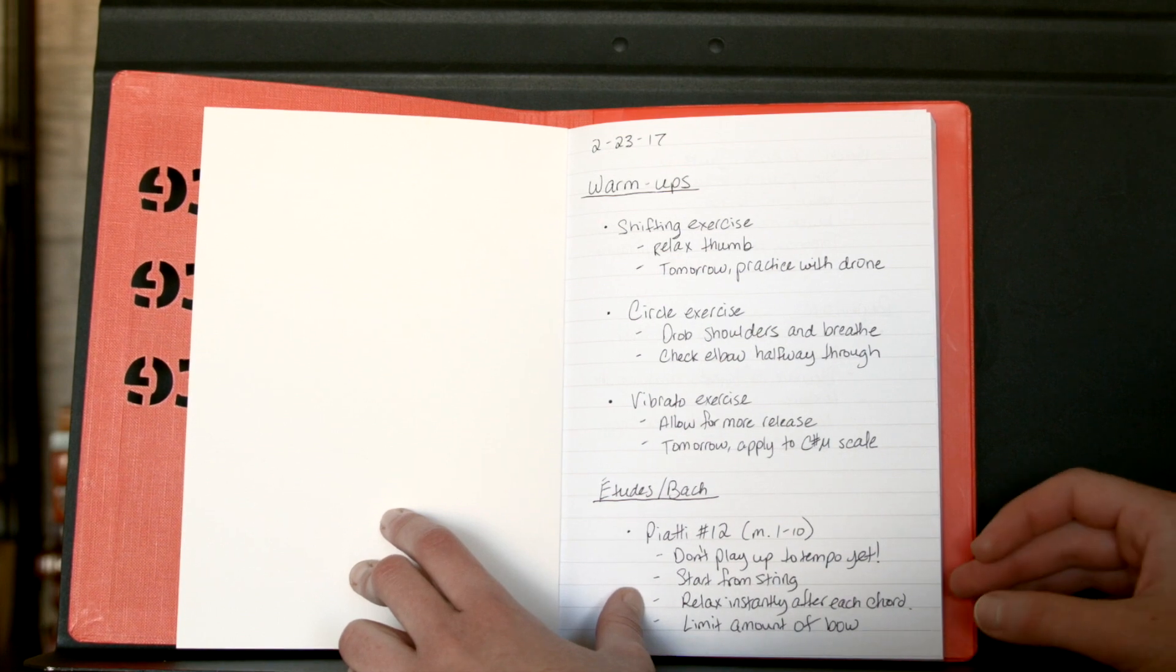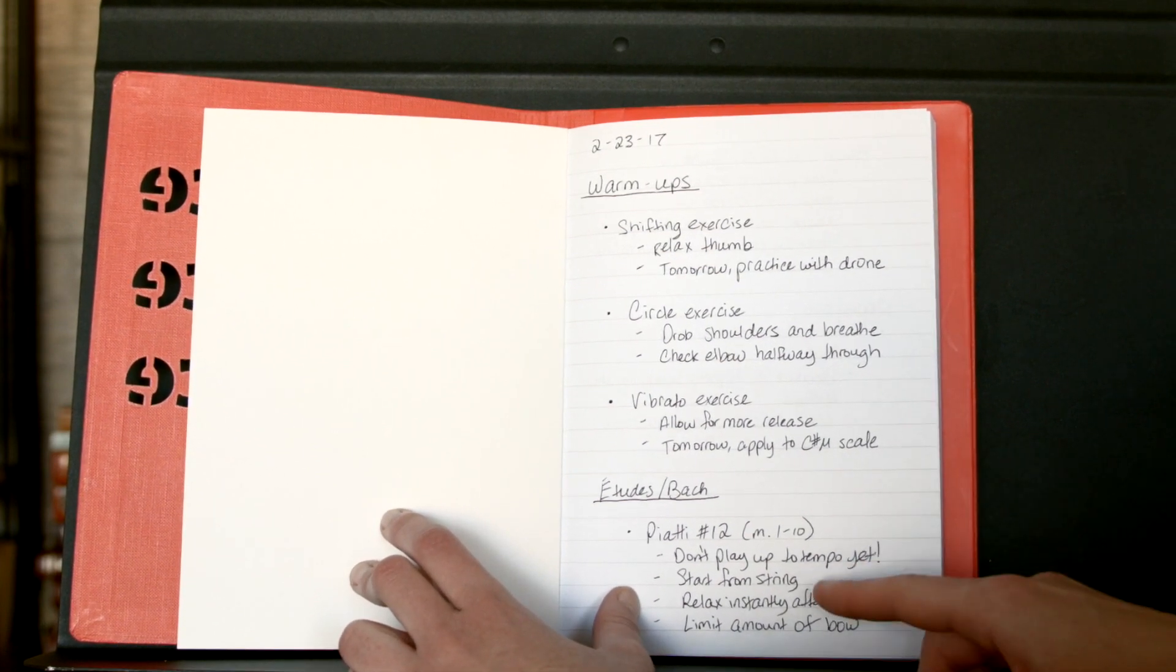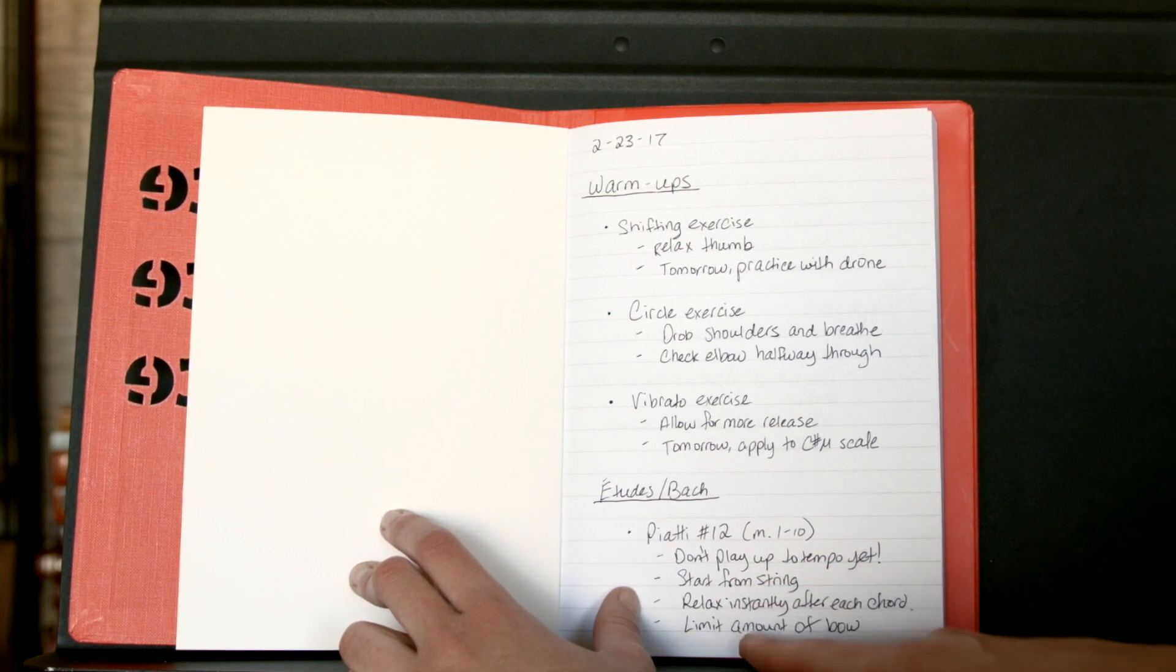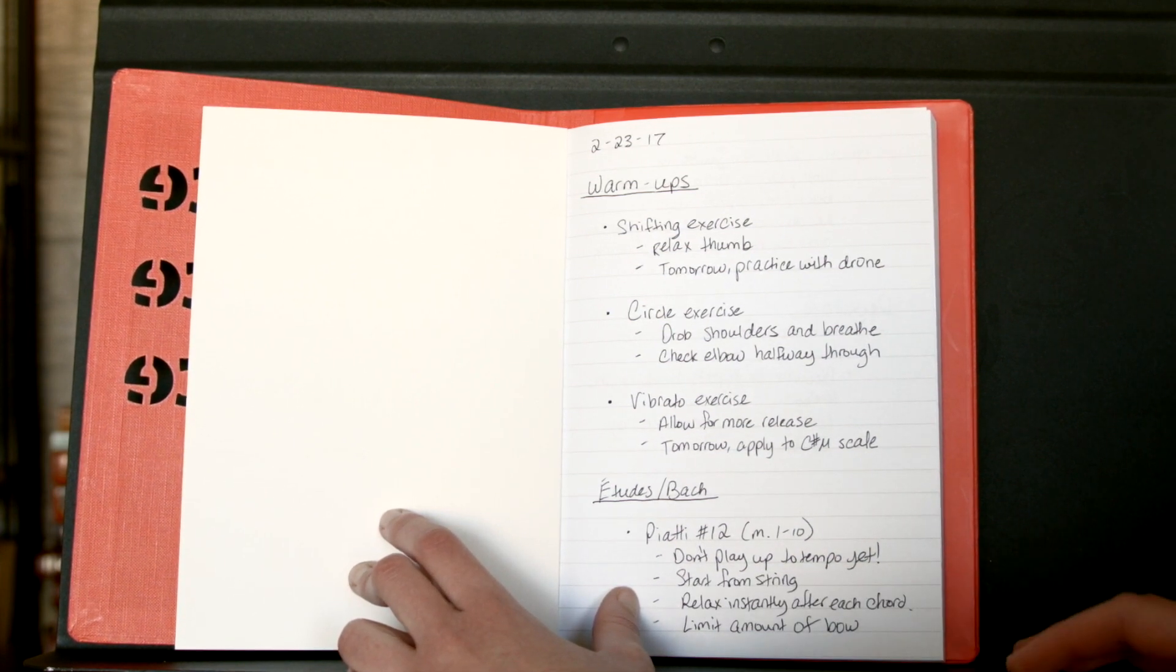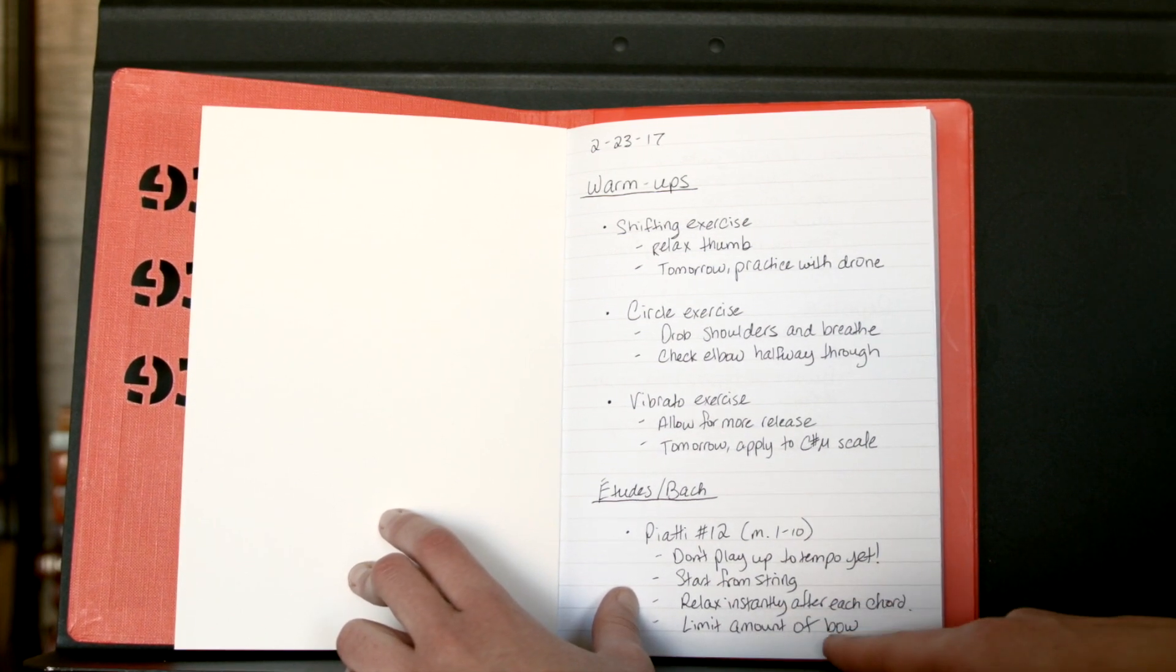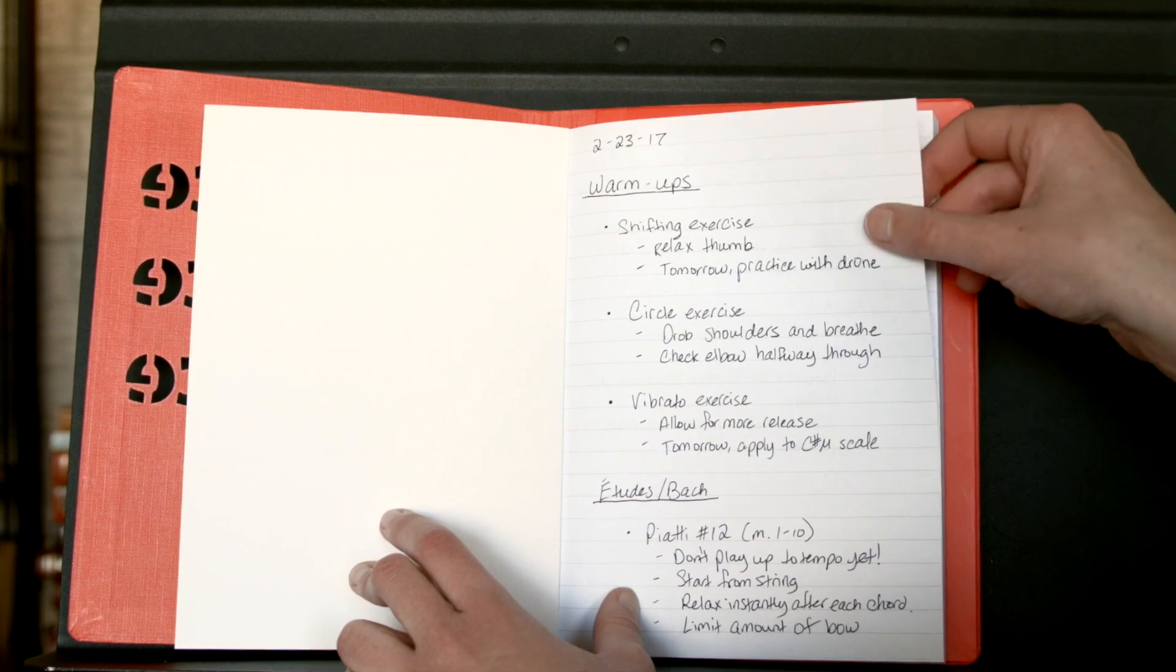Measures 1 through 10. I am not ready to play it up to tempo yet, even though I keep wanting to and trying to, but I need to stop. So writing a note to myself: play from string—or start from string—really, really important. Relax instantly after each chord. Limit amount of bow. You know, just things that make sense to me.